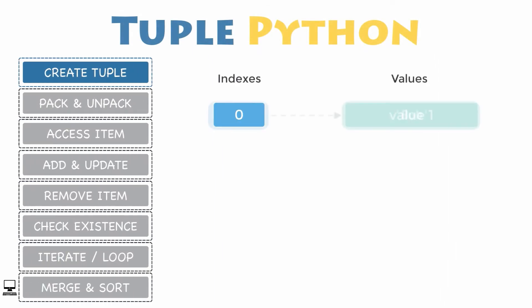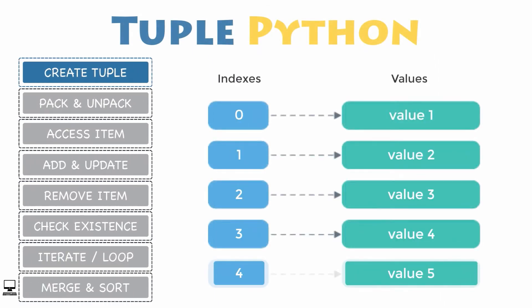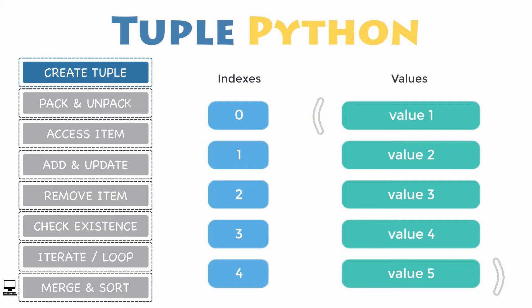Creating a tuple: unlike lists in Python, tuples are defined by enclosing the elements in parentheses instead of square brackets. You can create a tuple by placing a comma-separated sequence of items in parentheses. A tuple containing zero items is called an empty tuple, and you can create one with empty parentheses.